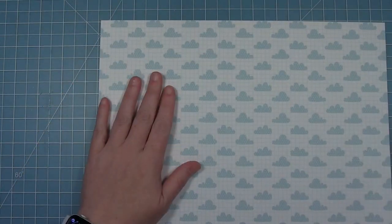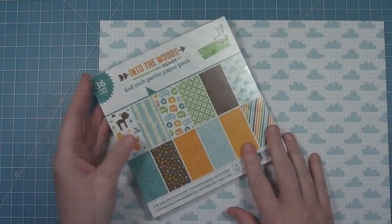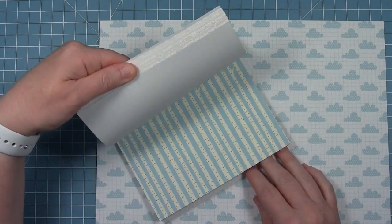Now I'm going to make a card using the hedgehog and I'm using some of the new Into the Woods remix papers. I'm going to use the 12 by 12 sheet with those clouds.